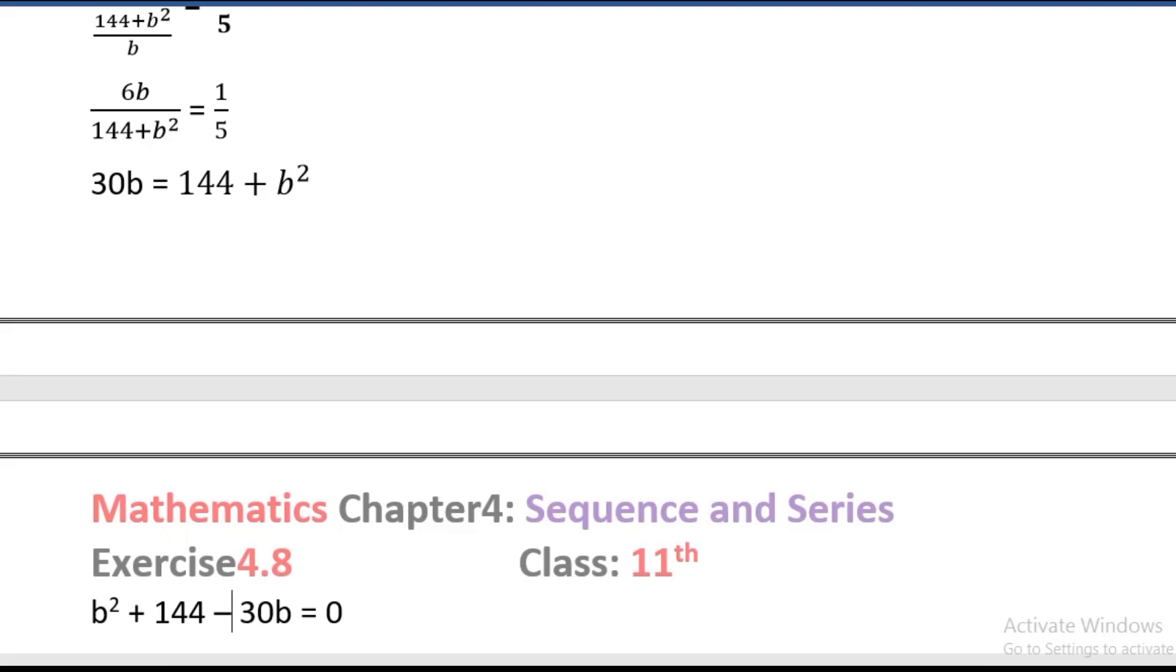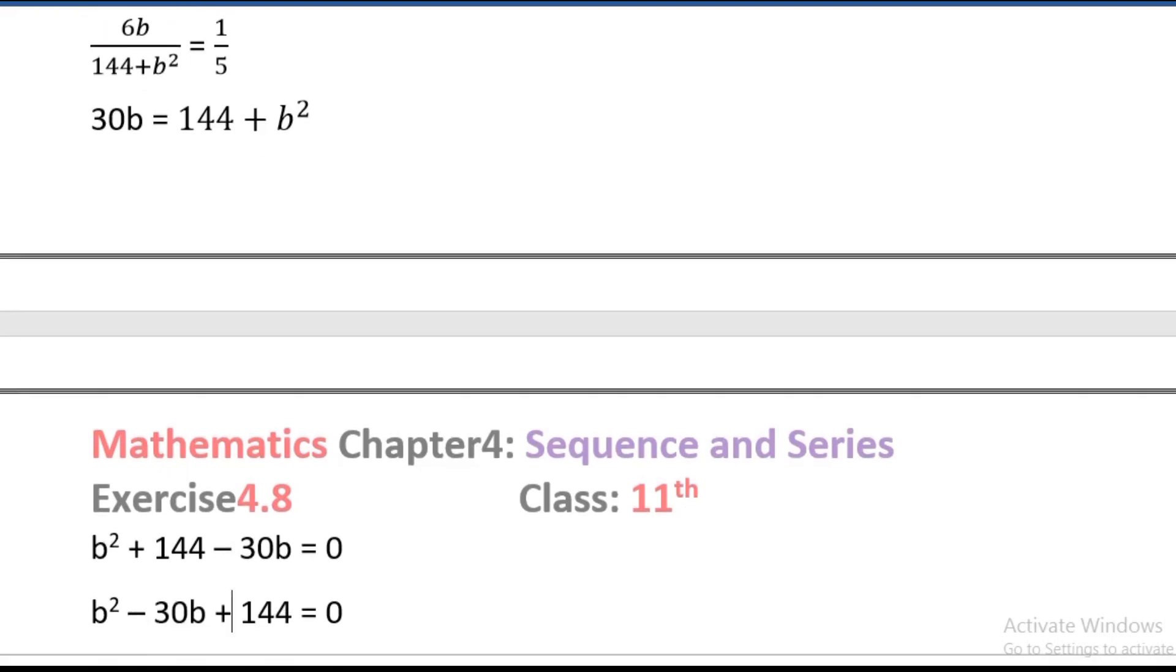b squared plus 144 minus 30b equals 0. So b squared minus 30b plus 144 equals 0.